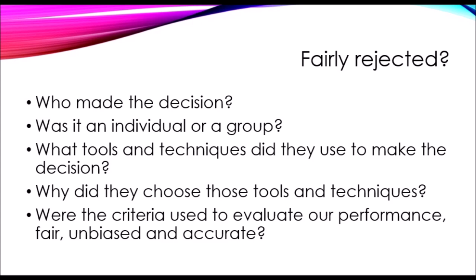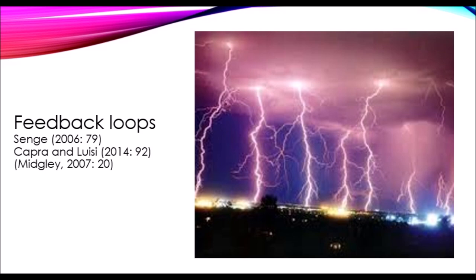Feedback loops are very important in systems thinking. One way to describe them is through thermostats that control temperature or the way weather and storms are formed — always a result of highly complex interconnected variables. The feedback we receive may be both positive and negative, visible or invisible, conscious or unconscious, verbal or nonverbal. A cold reception to your ideas might inhibit the flow of creative energy, whereas a warm reception might create a fertile environment for a creative idea to be shared, nurtured and developed.